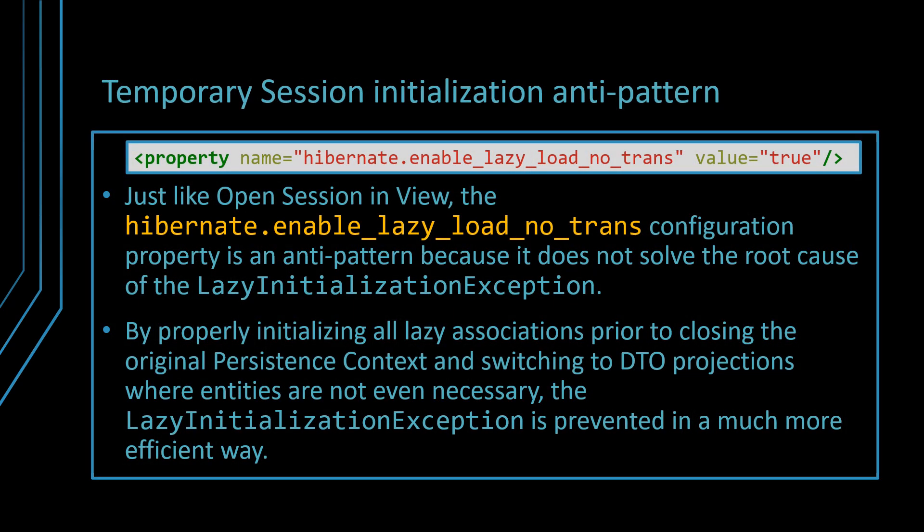Similar to OpenSessionInView, Hibernate offers the enable_lazy_load_no_trans configuration property, which allows an uninitialized lazy association to be loaded outside the scope of its original persistence context. Behind the scenes, a temporary session is opened whenever a new proxy association has to be fetched. And just like OpenSessionInView, a database connection will be needed as well, just for the scope of running the proxy loading query. So like OpenSessionInView, the enable_lazy_load_no_trans configuration property is also a performance anti-pattern. By properly initializing all the needed lazy associations prior to closing the initial persistence context, and switching to DTO projections for read-only views, the lazy initialization exception can be prevented in a much more efficient way.